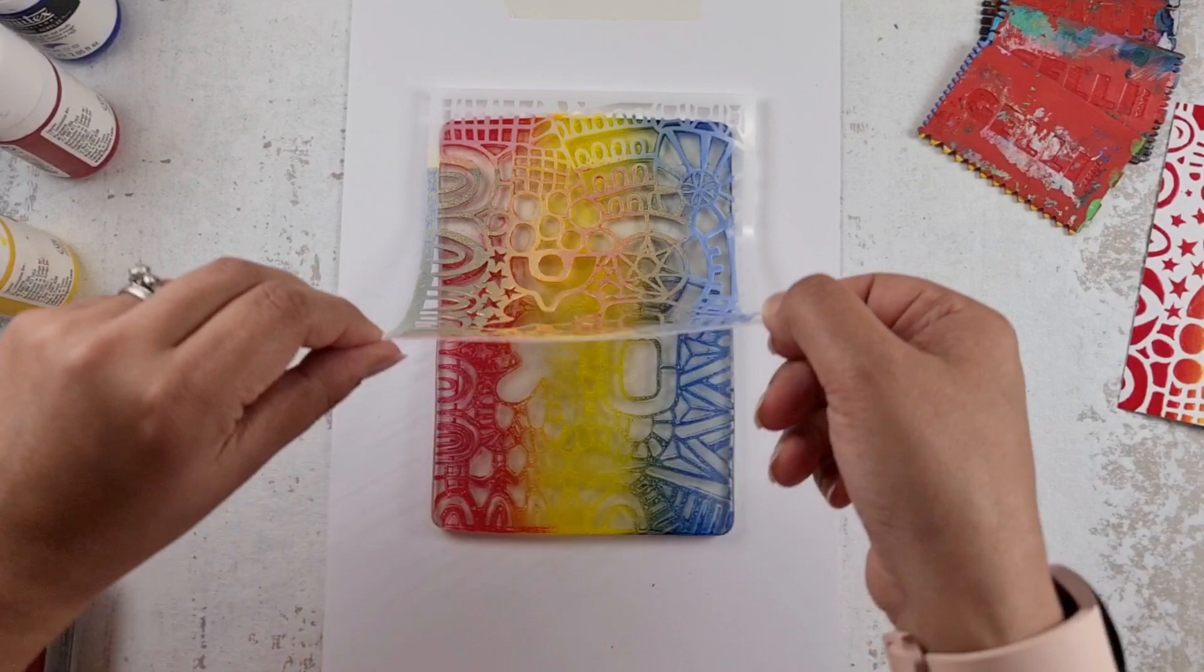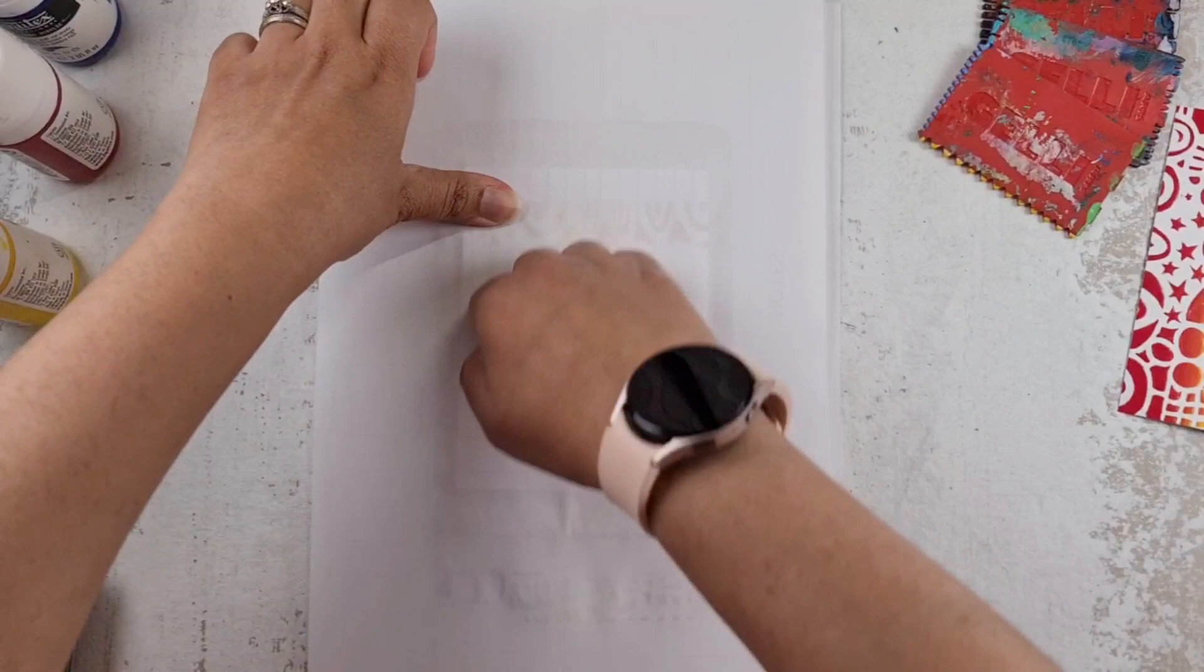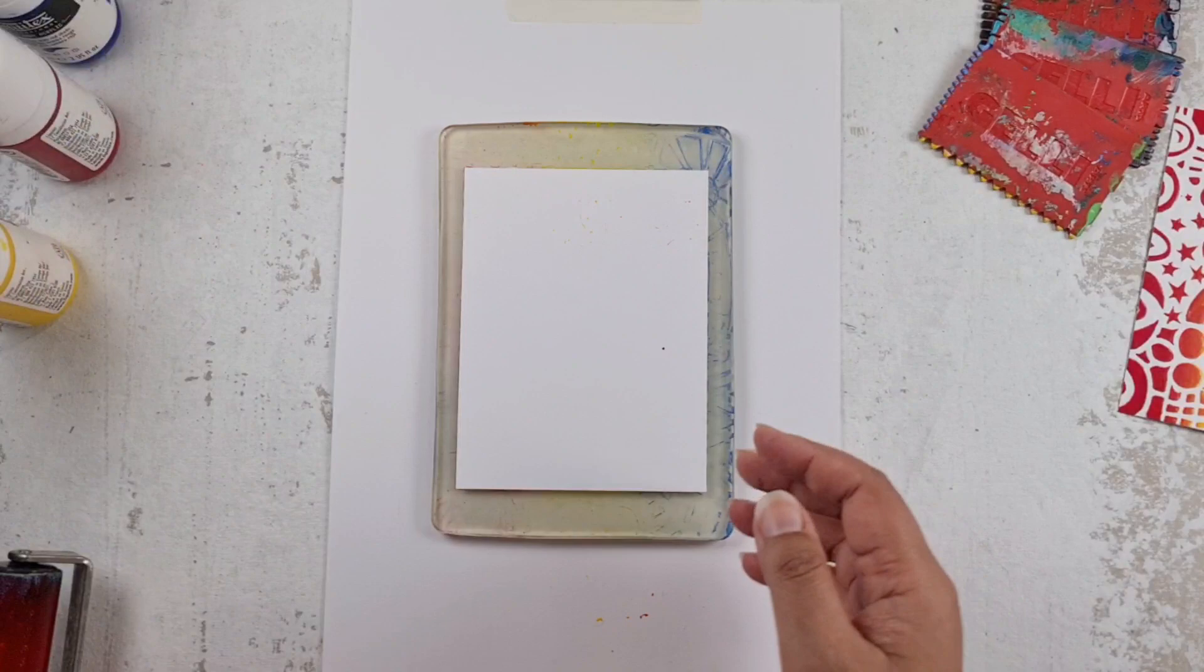And then while that paint is still wet on the gel plate, I'm using a Geliots 5 by 7 gel plate. I'm pulling another print and that is going to give me my second print. And literally within less than 5 minutes, I have two beautiful backgrounds ready to go.